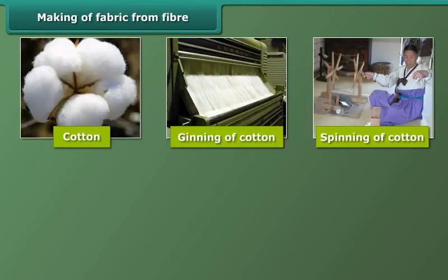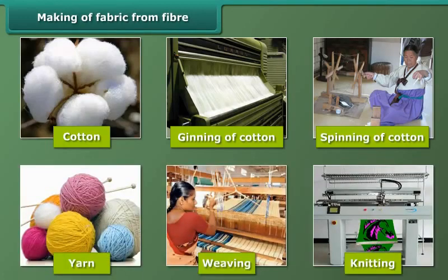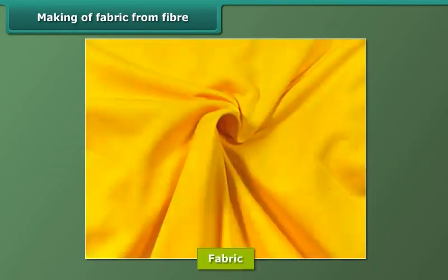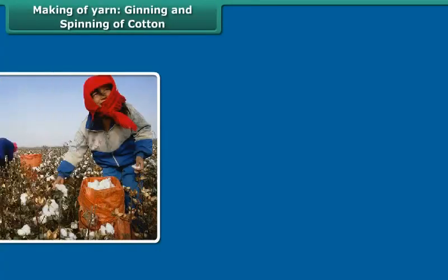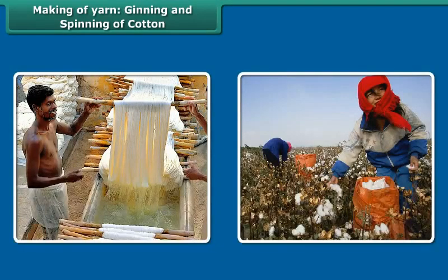Making of fabric from fiber: First, yarn is made from fiber, and then fabric from yarn. Yarn making — ginning and spinning of cotton: To make fiber, cotton is picked by hand from cotton balls, and then fiber from the seeds is separated by combing. This is called ginning.